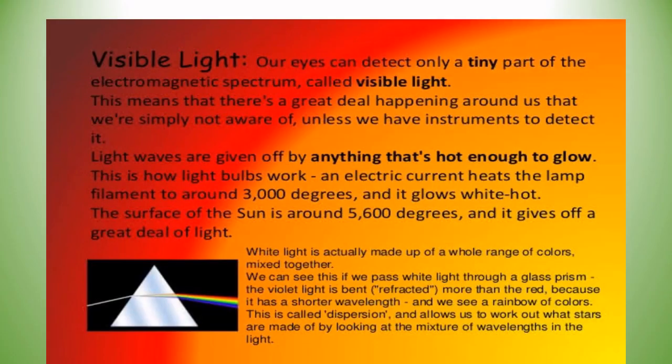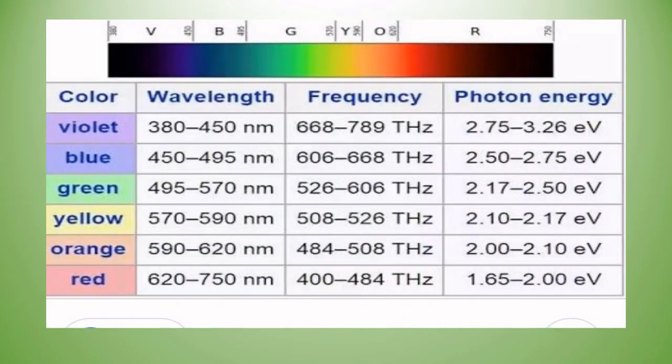There is a great deal happening around us that we are simply not aware of unless we have instruments to detect it. Light waves are given off by anything that is hot enough to glow. The colors of visible light range from violet, blue, green, yellow, orange, to red, each with different wavelengths, frequencies, and photon energies.